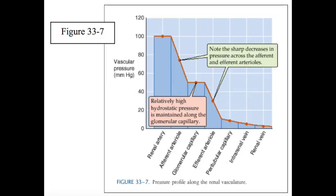constricting the efferent arteriole while relaxing the afferent arteriole lowers PGC, i.e. glomerular capillary hydrostatic pressure. Conversely, constricting the efferent arteriole while relaxing the afferent arteriole raises glomerular capillary hydrostatic pressure.